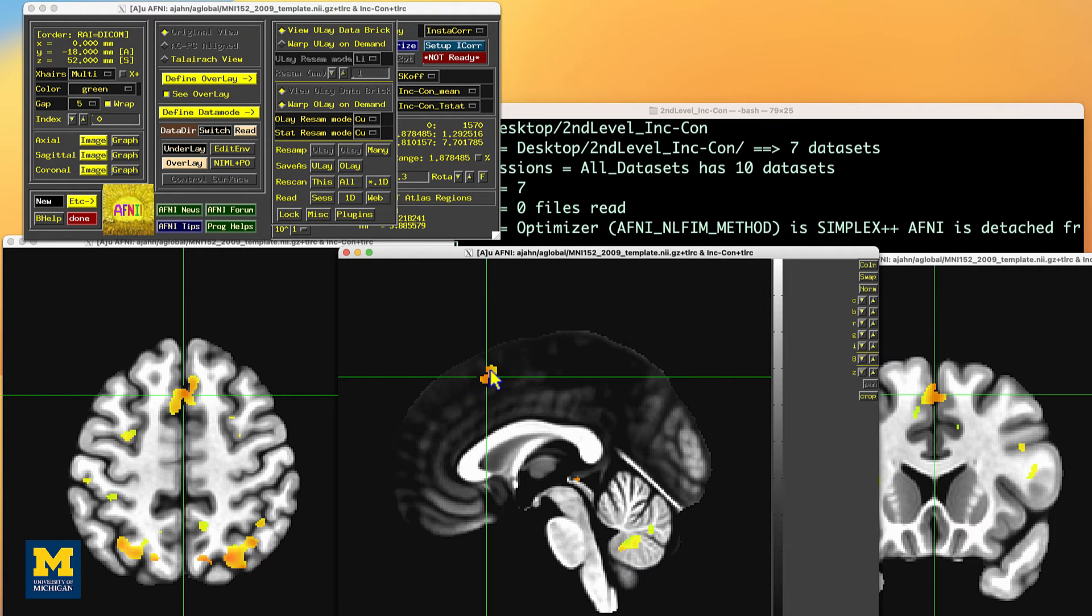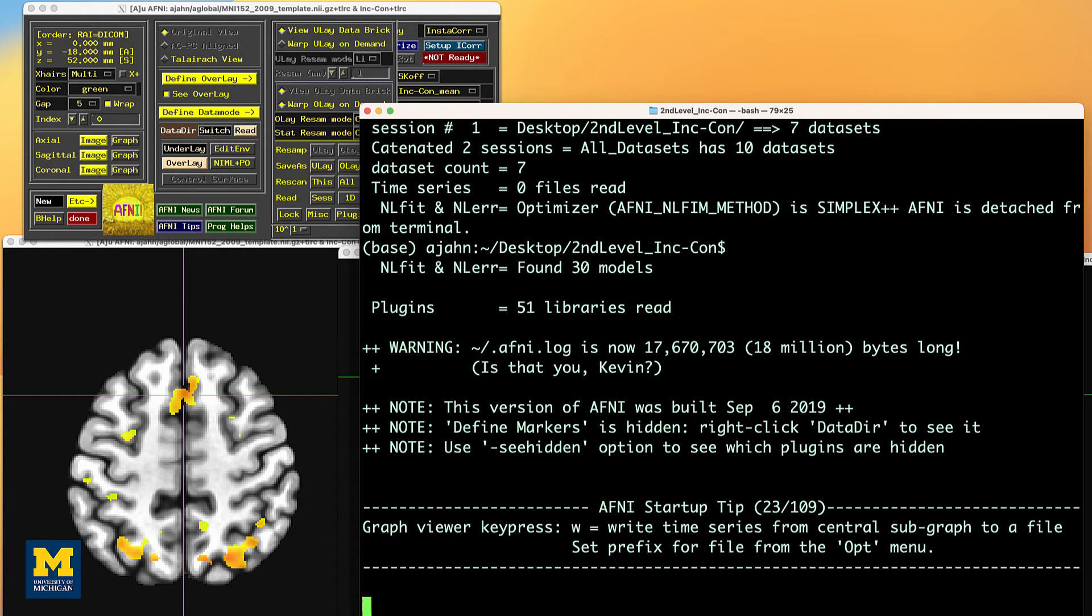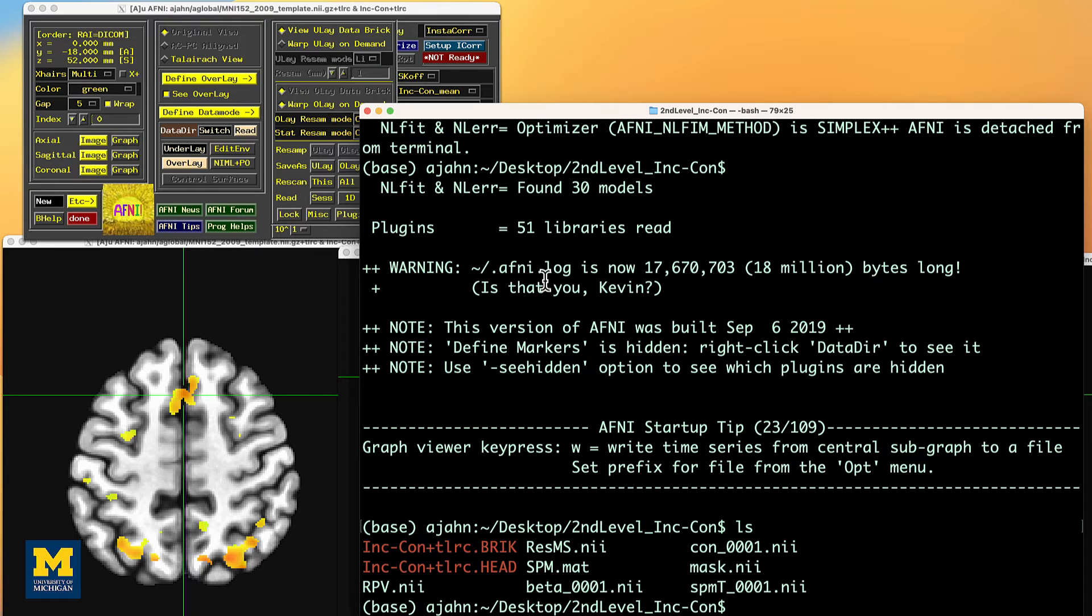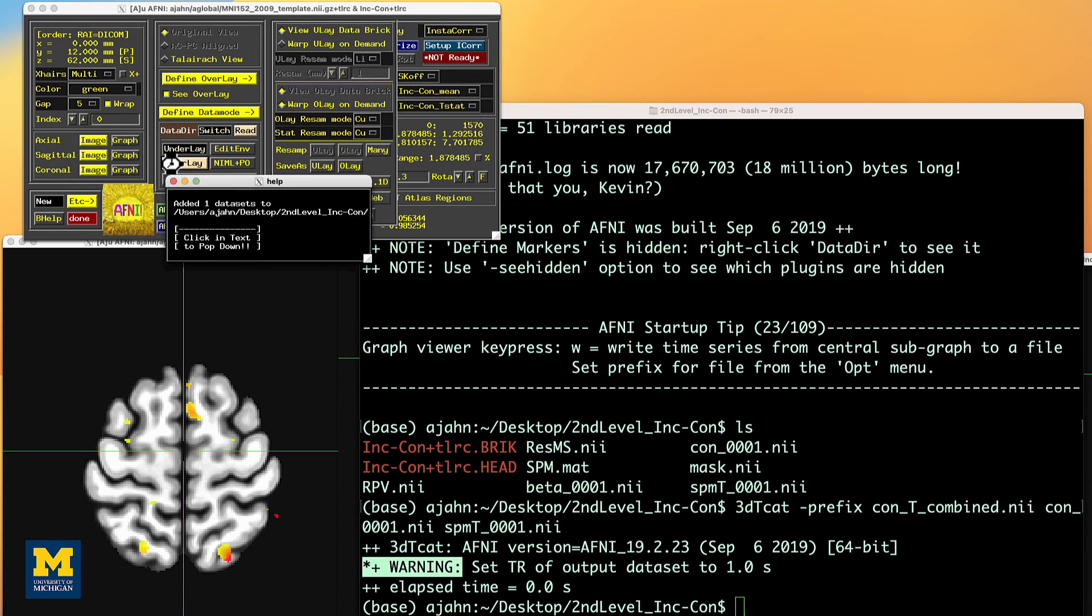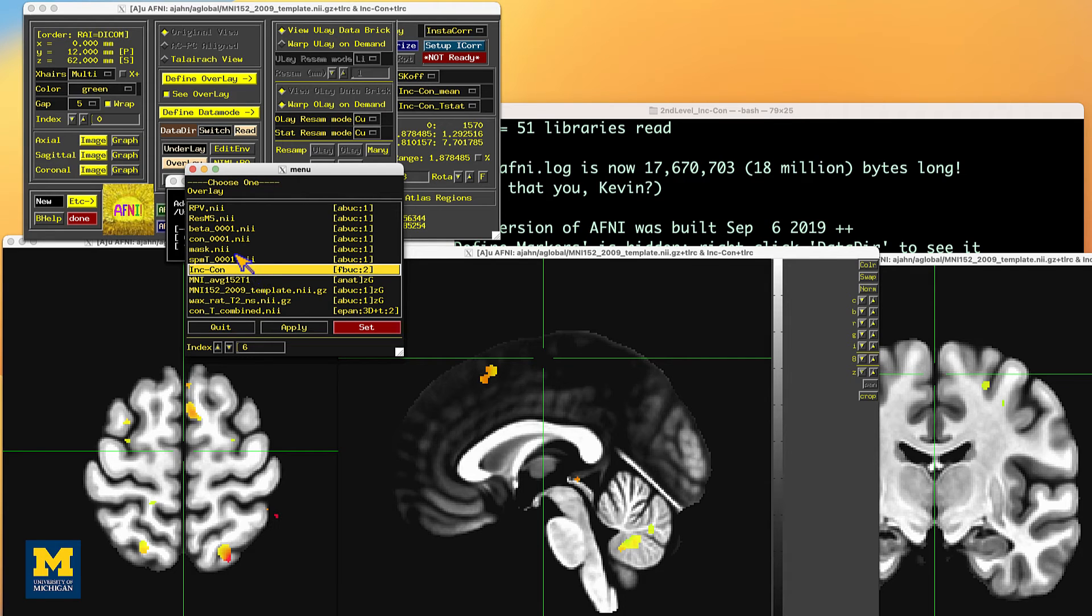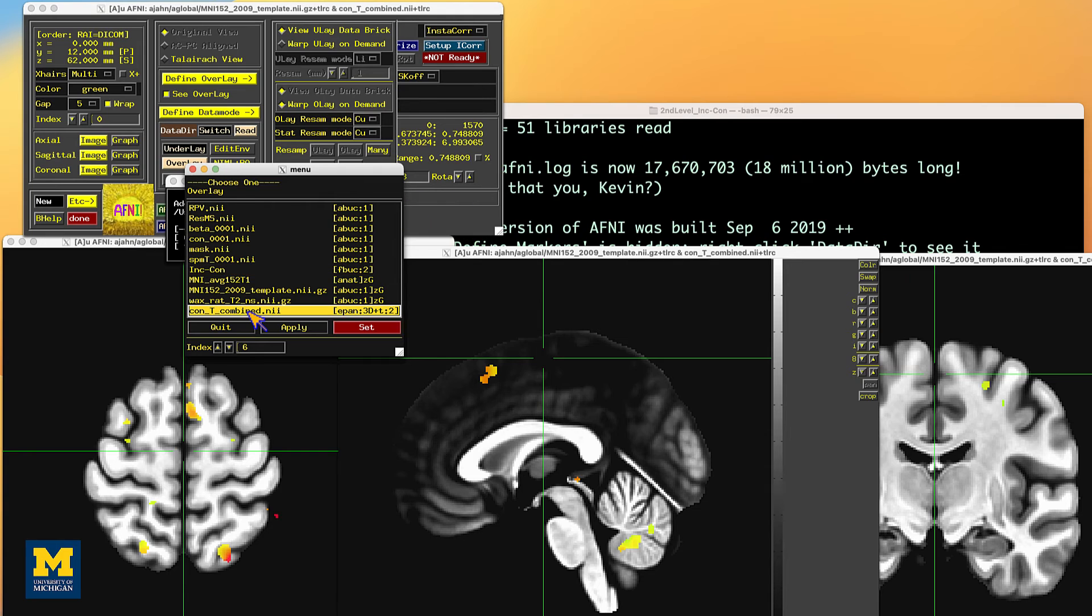If we wanted to do the same thing with results from, say, SPM, in the same folder, I have results analyzed in that software package. I have the t-statistic map along with the beta and a contrast value. In this case, I'm going to combine the t-statistic and the contrast by using AFNI's 3D TCAT command, but you can use whatever kind of calculator that you like. Once they're together, I overlay this new file on top of the template brain called CONT combined.